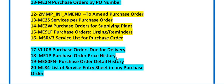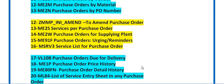ME1P is used for purchase order price history — you can track the price history of purchase orders. ME80F1 gives the purchase order details history. ML84 gives you the list of service entry sheets for any purchase order, showing which are accepted, not accepted, or in a blocked state.